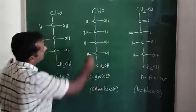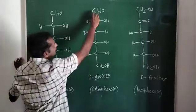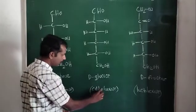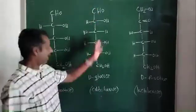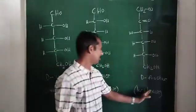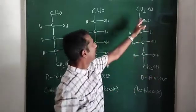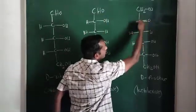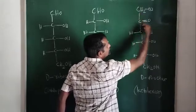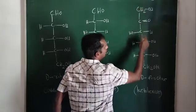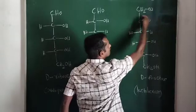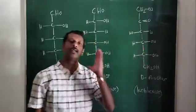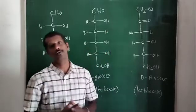In the structure of glucose, counting the carbon atoms: 1, 2, 3, 4, 5, 6 — six carbons means hexose. Since it contains an aldehyde group, glucose is an aldohexose. For fructose, you can see it contains a C=O keto group — not an aldehyde group. Counting the carbon atoms: 1, 2, 3, 4, 5, 6 — six carbons, with a ketone group present. Therefore, fructose is a ketohexose.